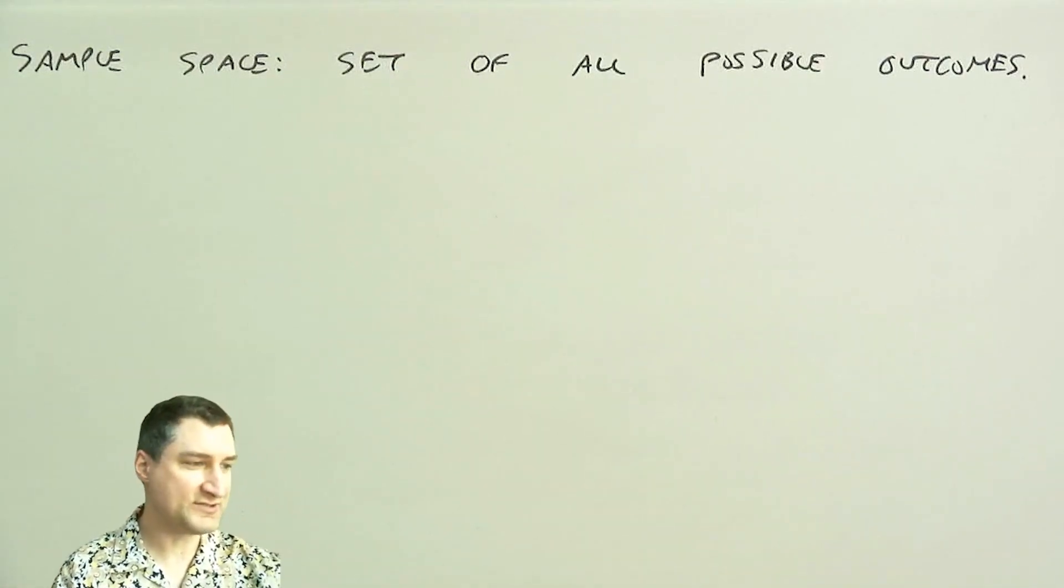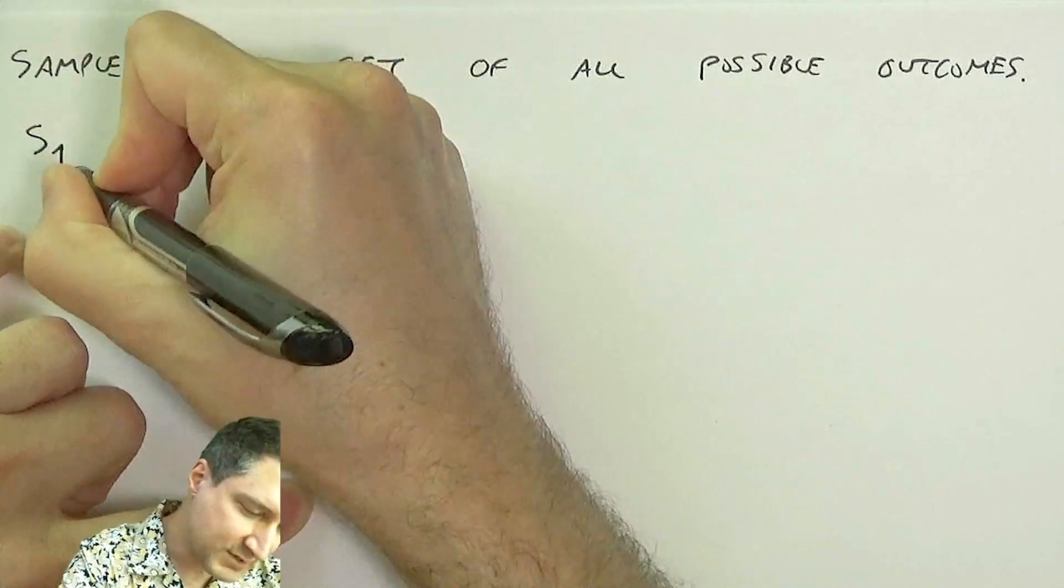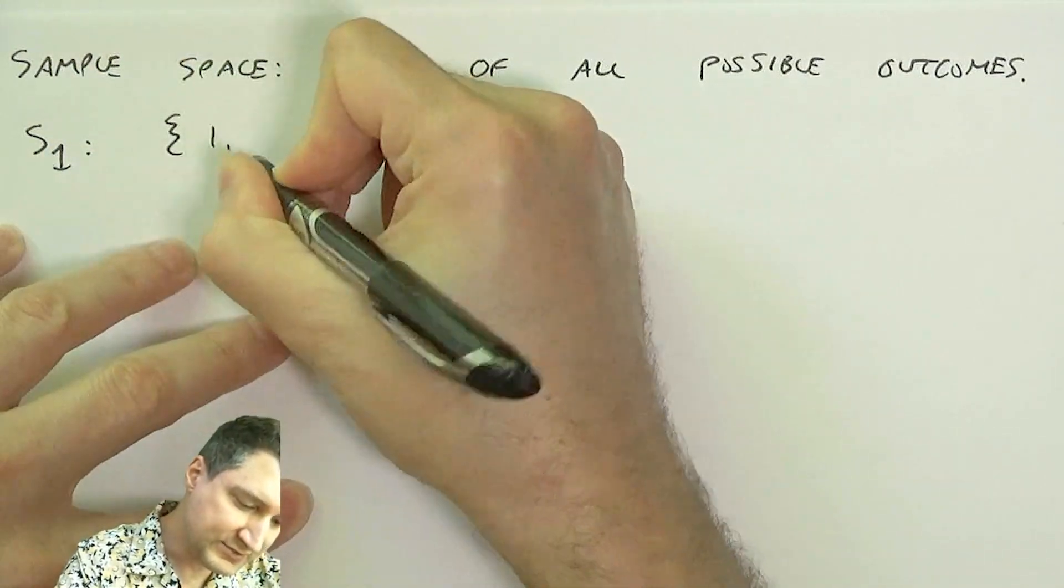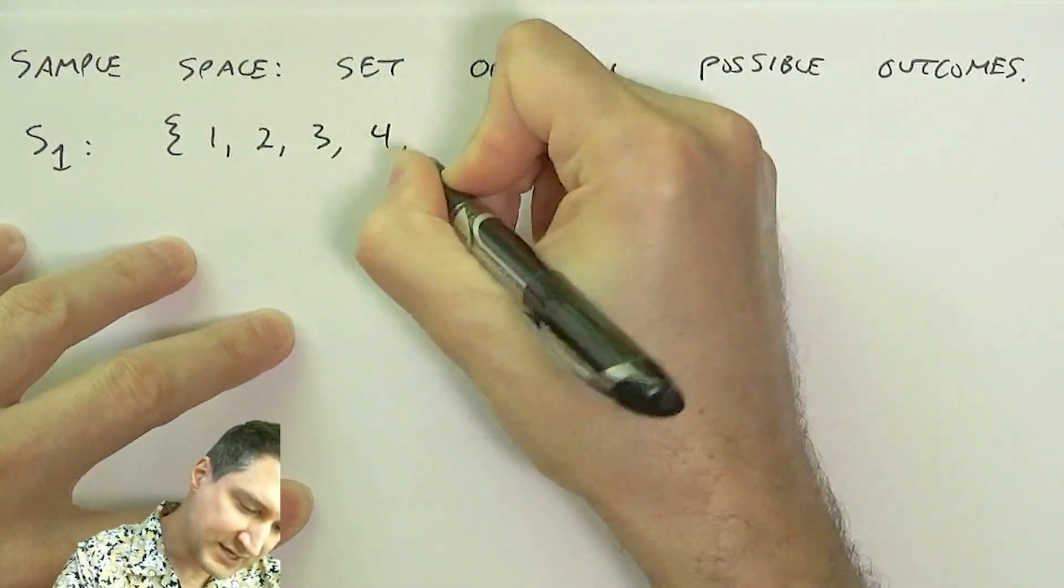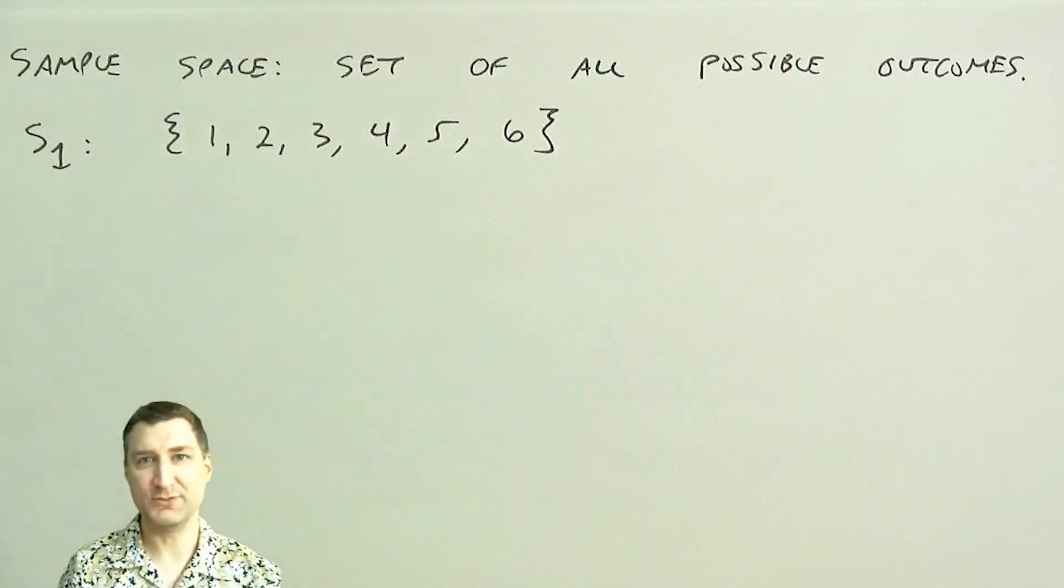So for example, let's go back to the things that I talked about earlier in these experiments. So the sample space for experiment one, rolling the die, is a set of numbers one through six, right? These are my possible outcomes for rolling the die.